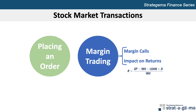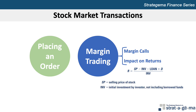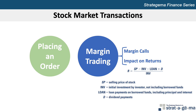The return on a stock is affected by the proportion of the investment that is from borrowed funds. Over short-term periods, the return R on stocks purchased on margin can be estimated as the selling price of the stock SP, less the initial investment excluding borrowed funds INV, less loan payments on borrowed funds, plus dividend payments D, all divided by the initial investment INV.